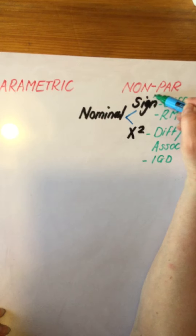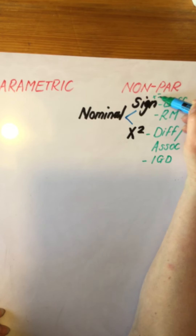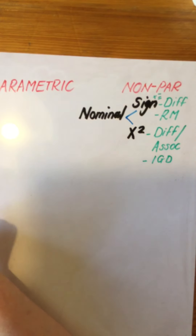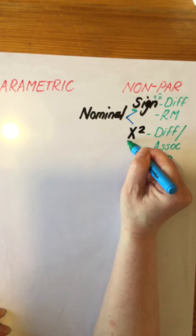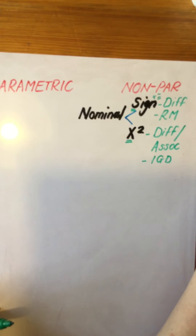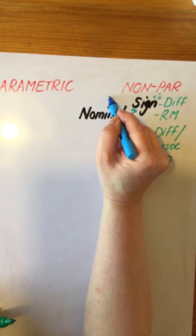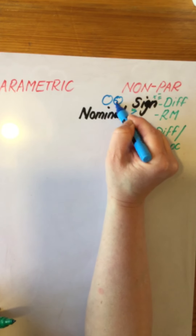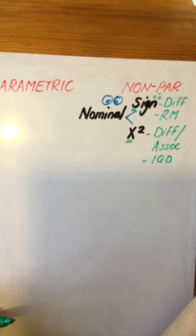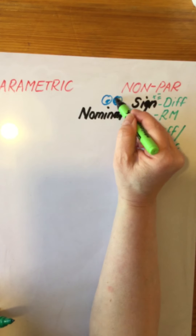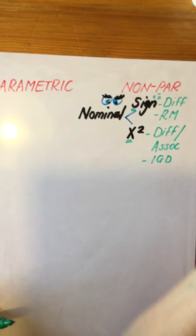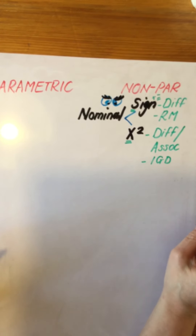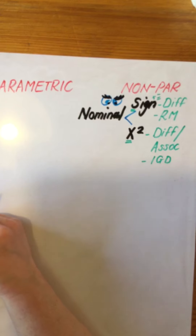Remember, sign is the one that you might be asked to calculate, and it's really easy because it's just pluses and minuses — looking for the value of S. Our calculated value of S, the one that we have observed, is the one we are going to compare to our tabled value, which we refer to as our critical value, to see whether we have statistical significance.